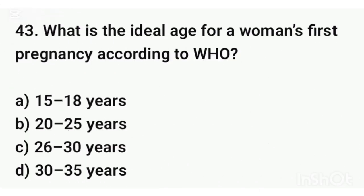Question number forty-three. What is the ideal age for a woman's first pregnancy according to the World Health Organization? The correct answer is option B: 20 to 25 years.